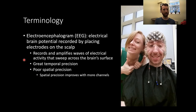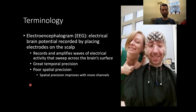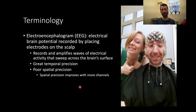Next up is the electroencephalogram, or EEG. This is a method of measuring the electrical brain potential recorded by placing electrodes on the scalp. It records and amplifies waves of electrical activity that sweep across the brain's surface, picking up sweeping changes in activity across the scalp to measure changes of populations of neurons. This has great temporal precision — very time-specific, with fine millisecond-level precision.